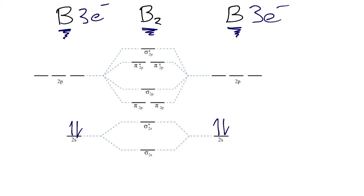Then we'll continue to fill in our higher energy atomic orbitals, which will be the three 2p atomic orbitals. We have one electron left over for each boron atom since we already used two in the 2s orbitals, so we'll add one in on each side.